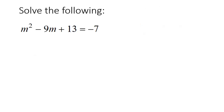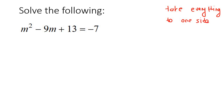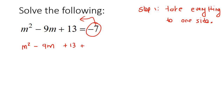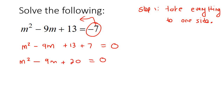Here's our first question. If you realize that there is a quadratic, then what you need to do is take everything to one side — that's step one. So let's take this negative 7 over. We're going to end up with m squared minus 9m plus 13 plus 7, and then make the other side equal to 0. The 0 is your friend — you want to see 0 on the other side. So we end up with m squared, take away 9m, add 20, and make that equal to 0.